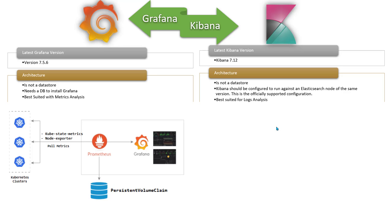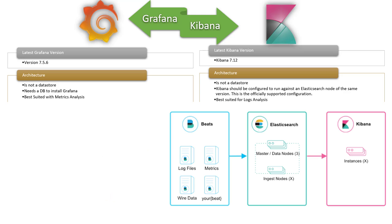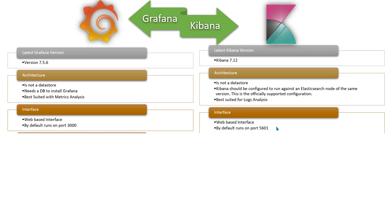Grafana is best suited for metric analysis. When it comes to Kibana, Kibana is also not a data store — you cannot send data directly to Kibana. Kibana is just a visualization tool. You need to send the data to Elasticsearch, then run Kibana on top of Elasticsearch, and use Kibana to query all the logs you have. So Kibana is best suited to analyze logs, which is slightly different from analyzing metrics.